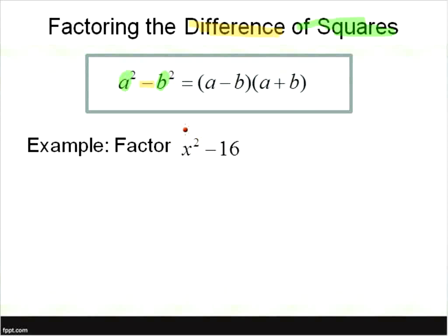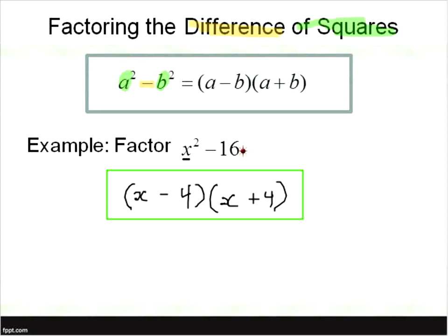Let's take a look at this example. Is the first term a perfect square? Yes. Is the last term a perfect square? Yes. Are we finding the difference? Yes. So let's set up our parentheses. Square root of the first term — square root of x squared is x. Square root of the first term minus the square root of the second term, times the square root of the first term plus the square root of the second term. That's it — we just factored this difference of squares.